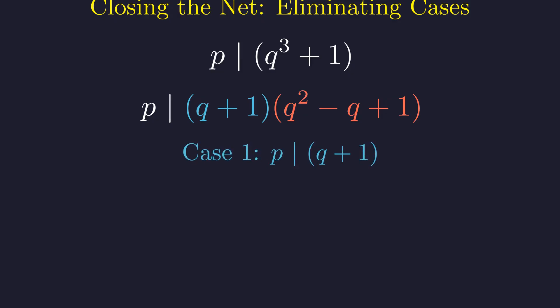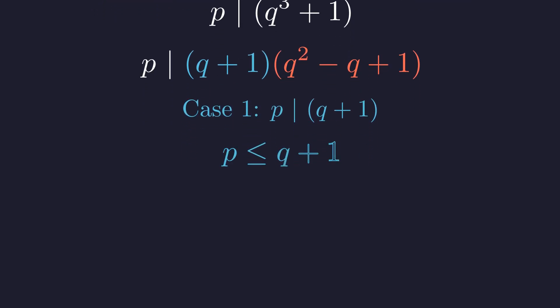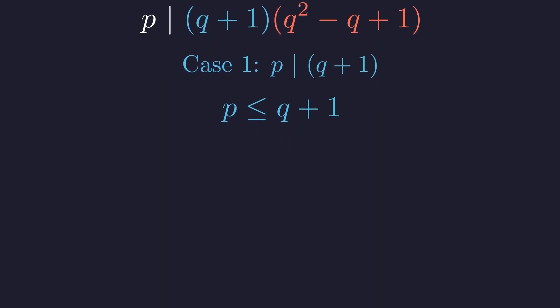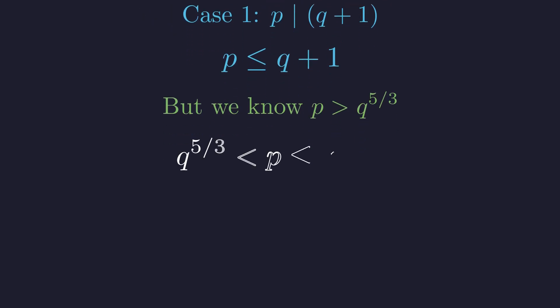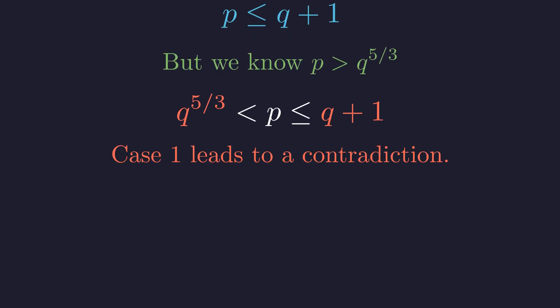Case 1, p divides the quantity q plus 1. If p divides q plus 1, then p must be less than or equal to q plus 1. However, we recall our initial inequality, p is greater than q to the 5 thirds. Combining these two inequalities leads to a potential contradiction. This composite inequality states that q to the 5 thirds is less than p, which in turn is less than or equal to q plus 1. However, the function q to the 5 thirds grows much faster than q plus 1. For the smallest prime, q equals 2, q to the 5 thirds is already greater than 3. For all primes, this inequality is impossible. Therefore, case 1 is impossible.